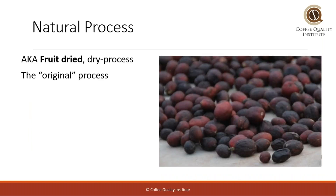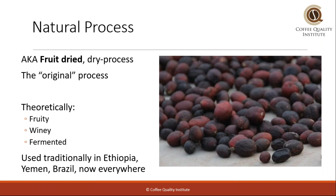The natural process, otherwise known as fruit-dried coffee or dry-processed coffee, we consider sort of the original coffee process, because before pulpers and demucilators were developed, there was just coffee dried in the fruit or in the pod. Theoretically these coffees are fruity, winey, and have fermented notes. Since coffee originated in Ethiopia — Arabica anyway — this was traditionally used there and now everywhere around the world that grows coffee. However, until recently this process was mainly used in regions that had water limitations. Now there's much more experimenting with non-traditional or newer processing methods in areas of the world even if they have lots of water.